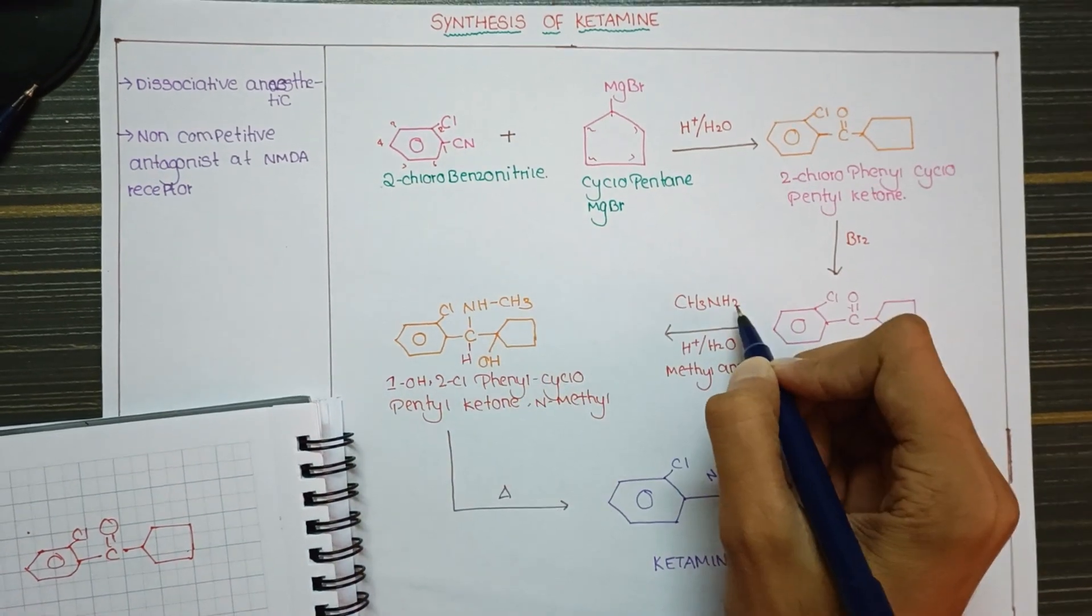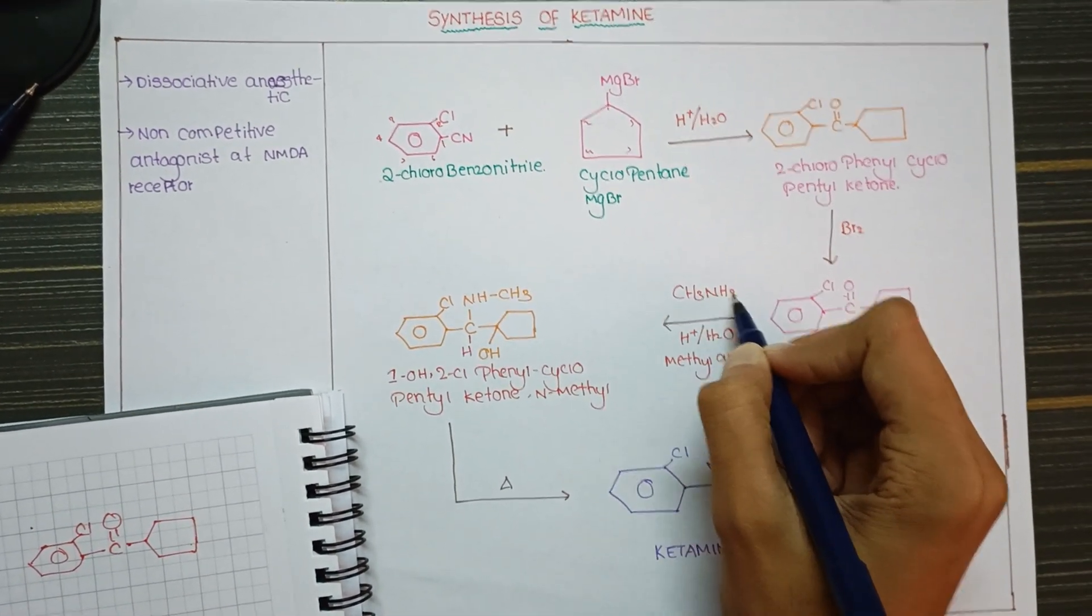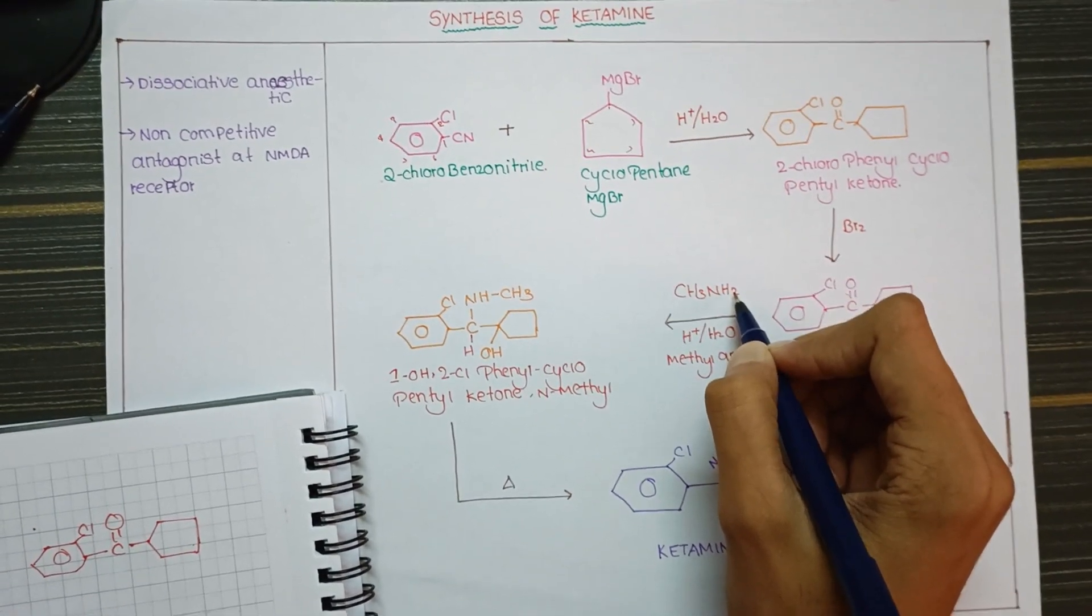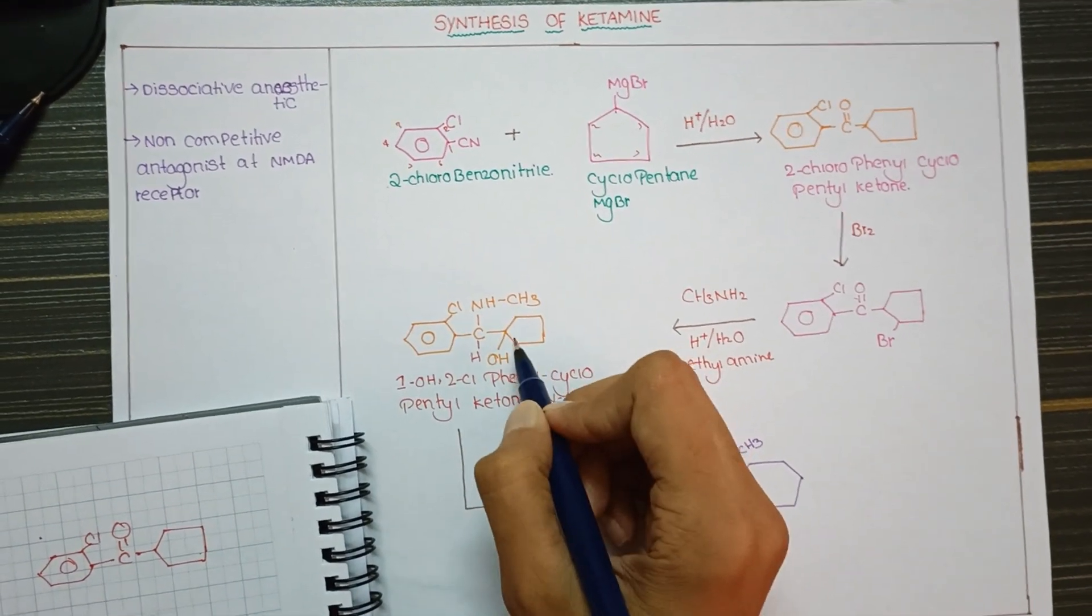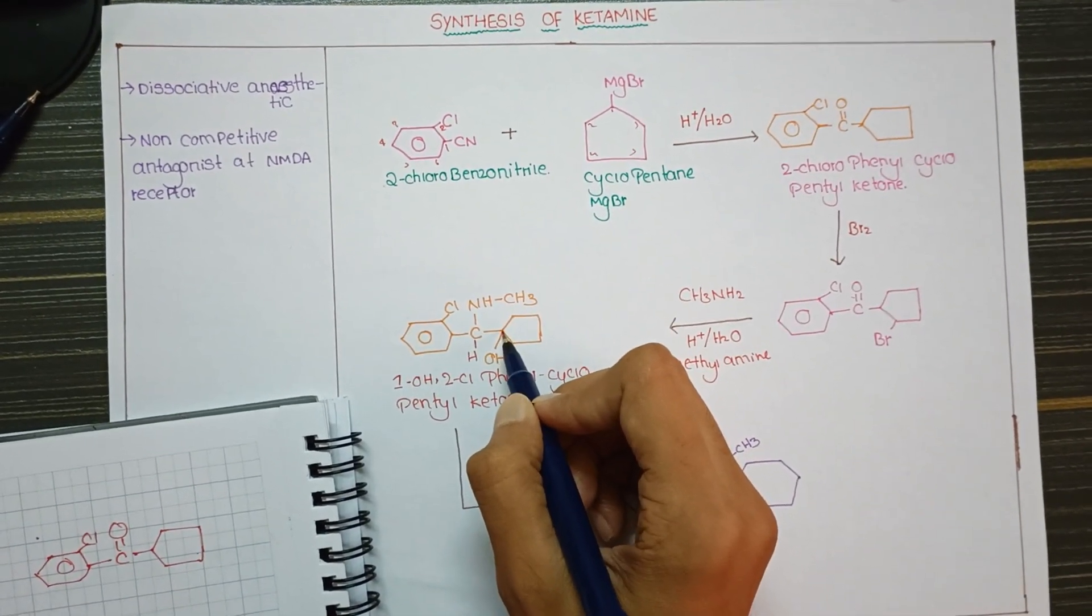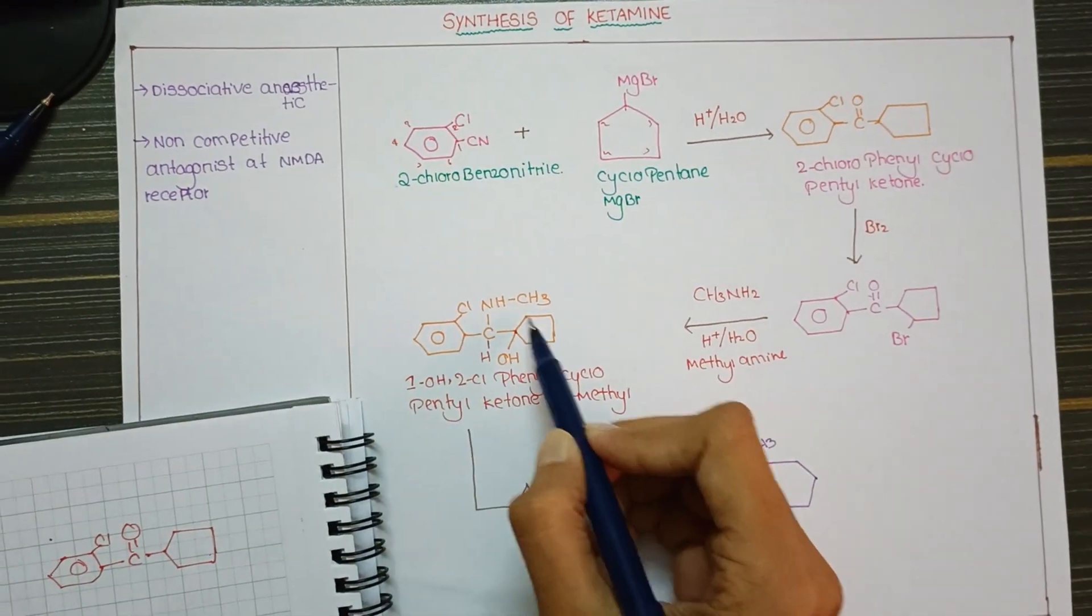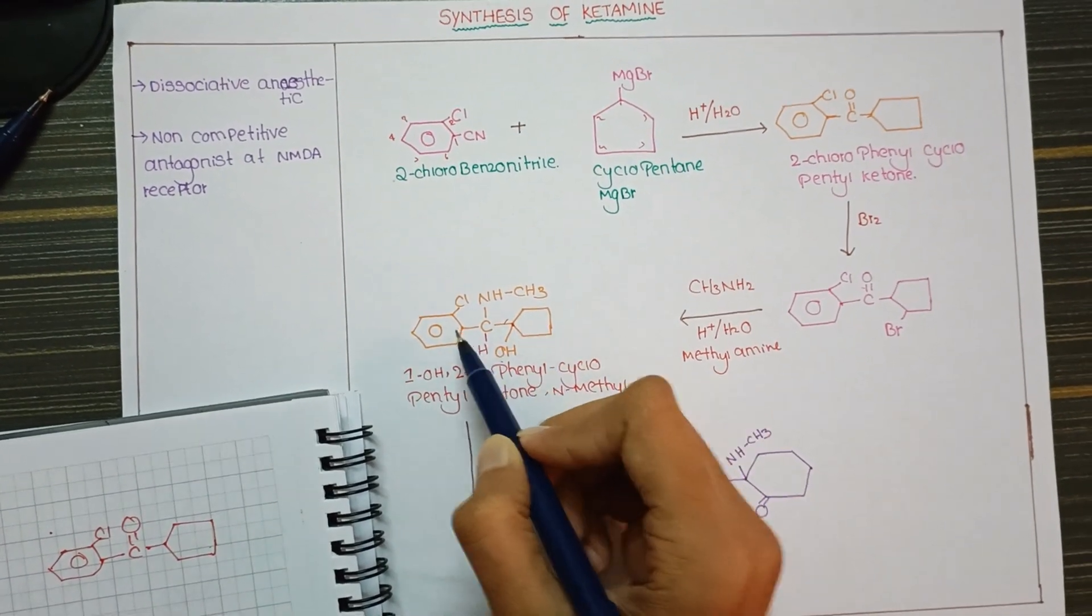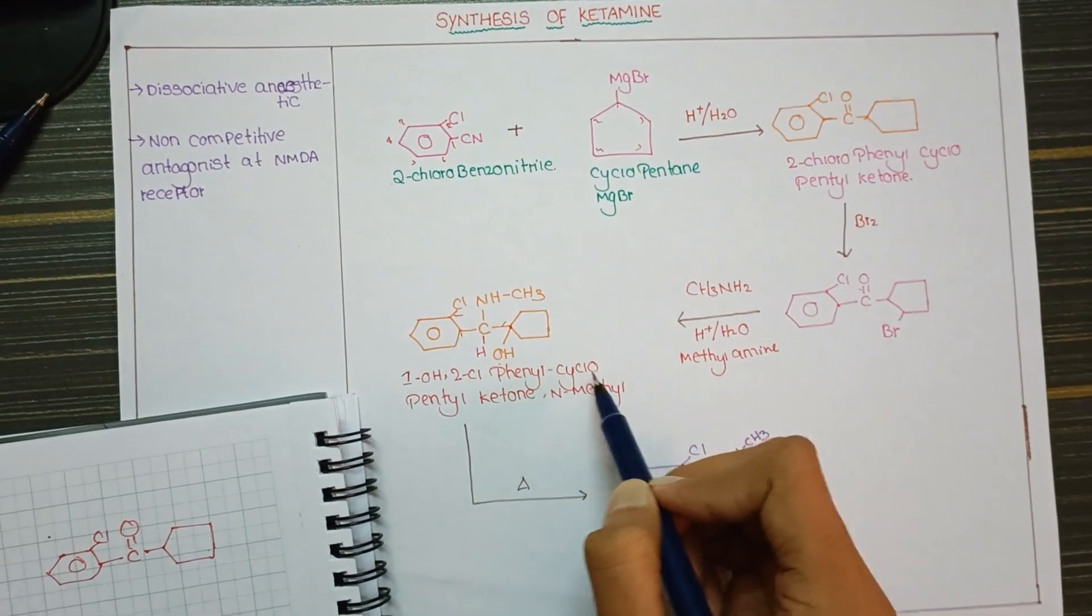To balance the valence, we get H here, and NHCH3. The hydrogen nitrogen loss results in NHCH3 at this position. At the first position of cyclopentane, we get OH. The nomenclature is: 1-hydroxy-2-chlorophenyl cyclopentane.